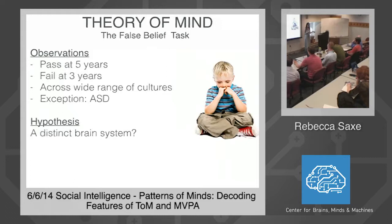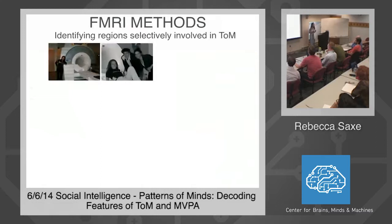As early as the mid-1990s when PET became available, and then certainly in the early 2000s with fMRI, people started testing the hypothesis that theory of mind might have a distinct neural basis. In my lab we do this with fMRI, so I'll give you a brief introduction to the fMRI methods that form the basic foundation of our research, and then tell you more about the current work we're doing.